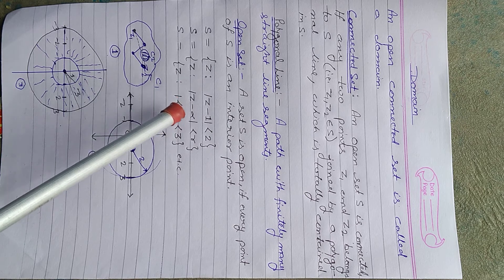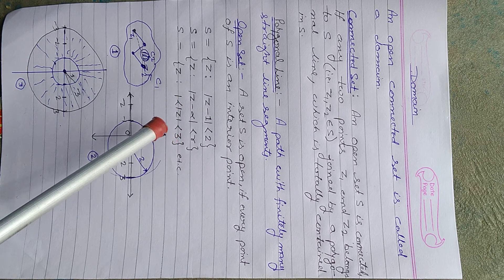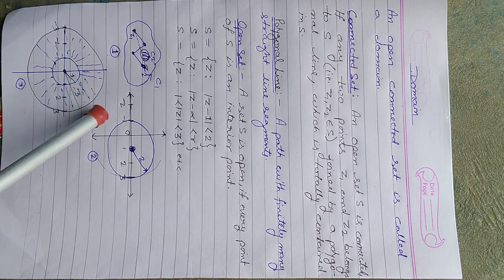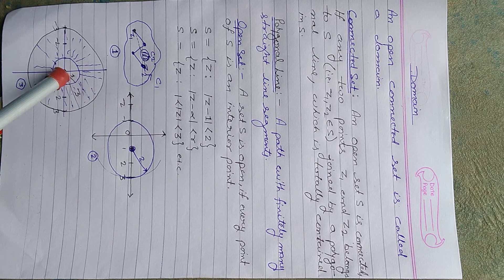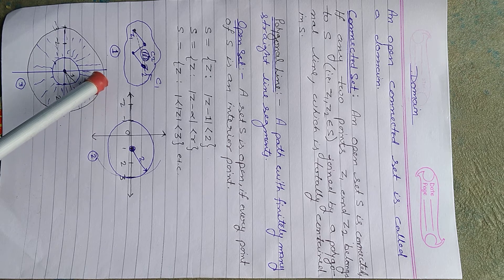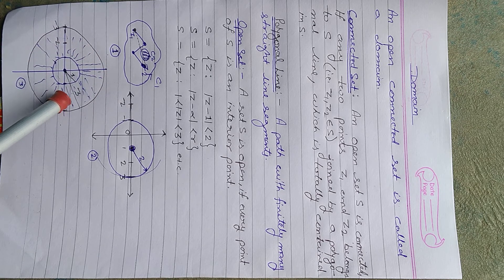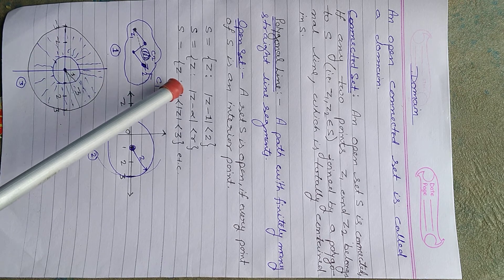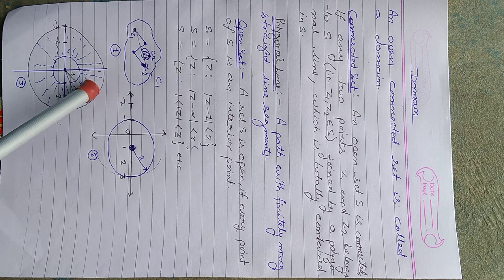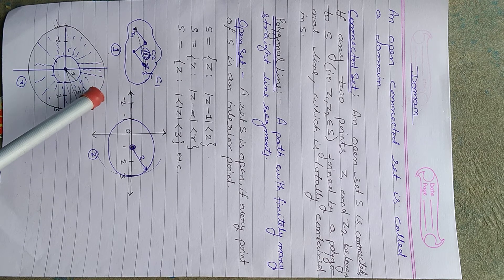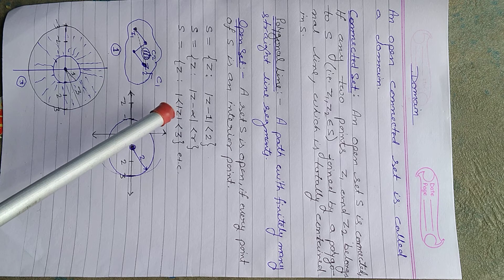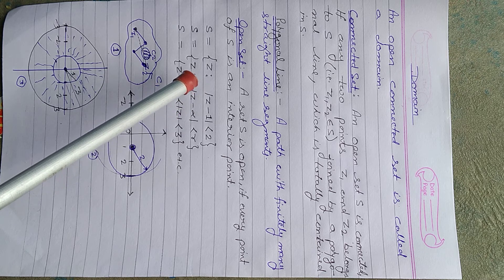Similarly, suppose we have an annulus region: S = { z : 1 < |z| < 3 }. This is an annulus region with two circles — one of radius 1 and one of radius 3. All points between radius 1 and 3 are elements of this set. Since no boundary points are included, this type of set is also known as an open set.